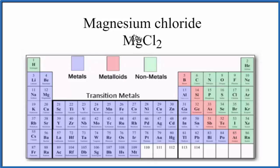So are the bonds between the magnesium and the chlorine atoms ionic or covalent? We have the periodic table here, and it's divided into metals and nonmetals.